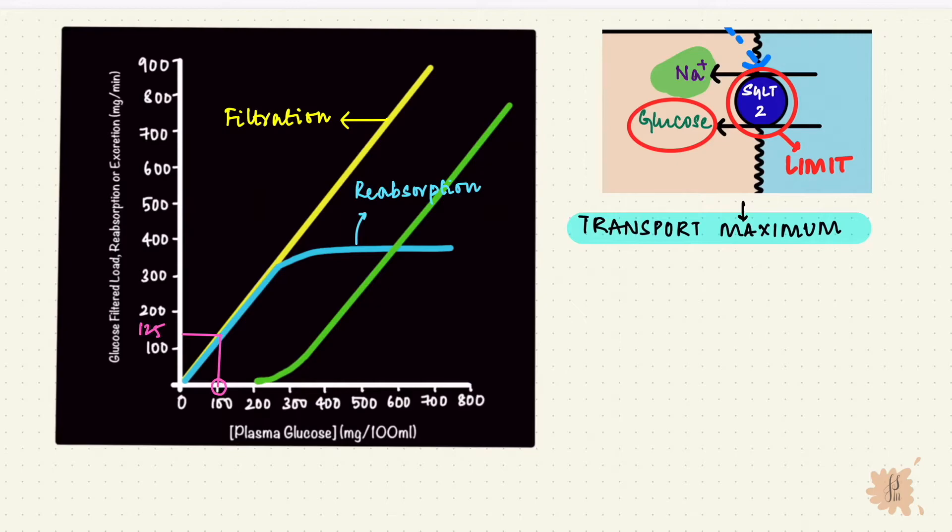If the plasma concentration of glucose increases to about 200 mg, that increases the filter load as well, and that reaches 250 mg per minute. At this point, a small amount of glucose starts appearing in the urine, and this is called the threshold for glucose.